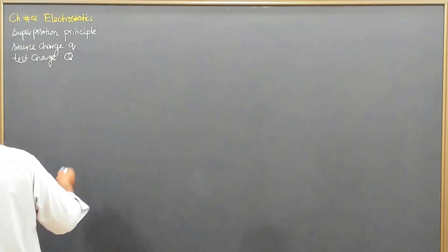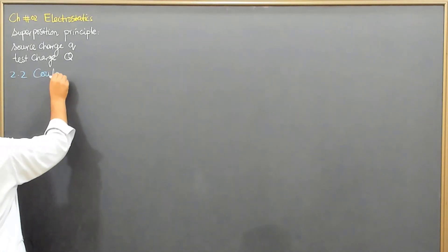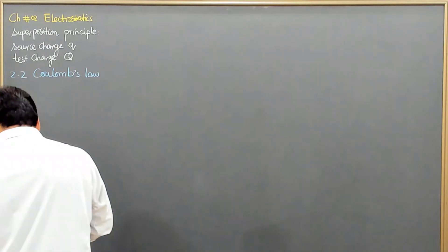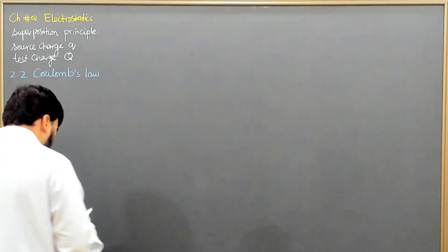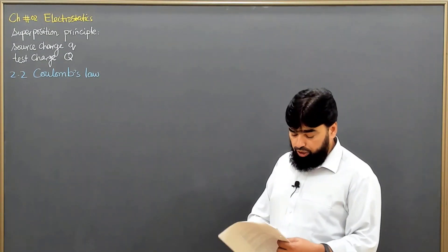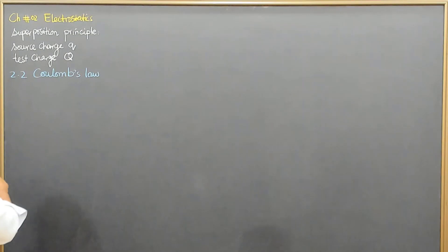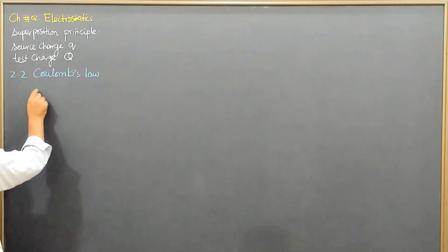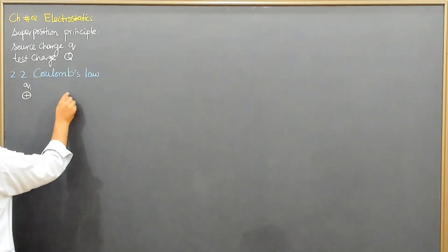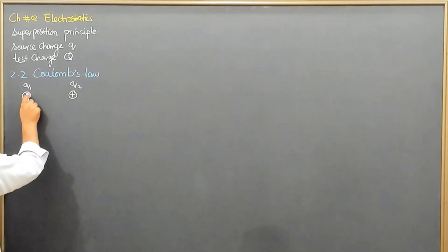Let me first explain the very fundamental law of this interaction, which we call Coulomb's Law, in general notation, and then we will convert it to Griffith's notation — whether the source charge is at the origin or off the origin. So let us start with section 2.2, which is Coulomb's Law. This law gives the basic interaction between charged particles. For example, consider two positive charges Q1 and Q2, with the distance between their centers being R.